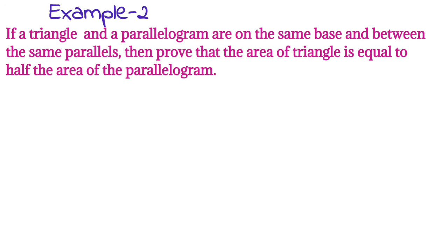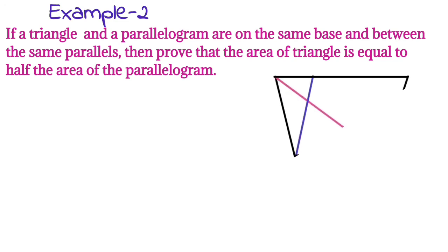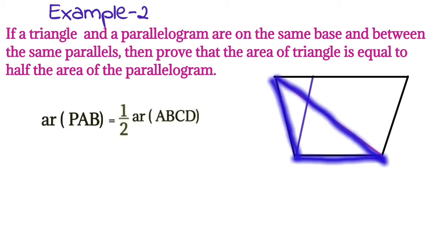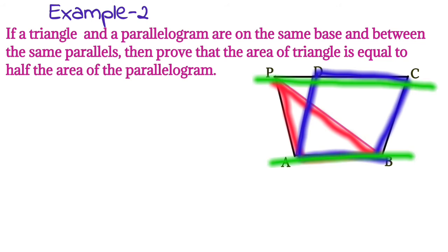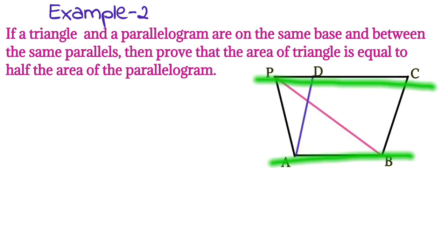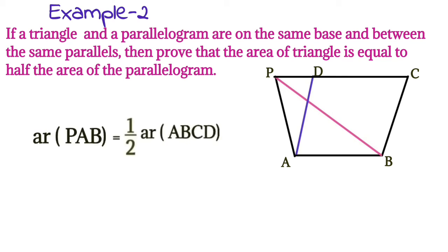See the question: if a triangle and a parallelogram are on the same base and between the same parallels, then prove that the area of the triangle is equal to half of the area of the parallelogram. It means two figures are there — one is a triangle and one is a parallelogram — standing on the same base and between the same parallel lines, and you have to prove the area of the triangle is equal to half of the area of the parallelogram.